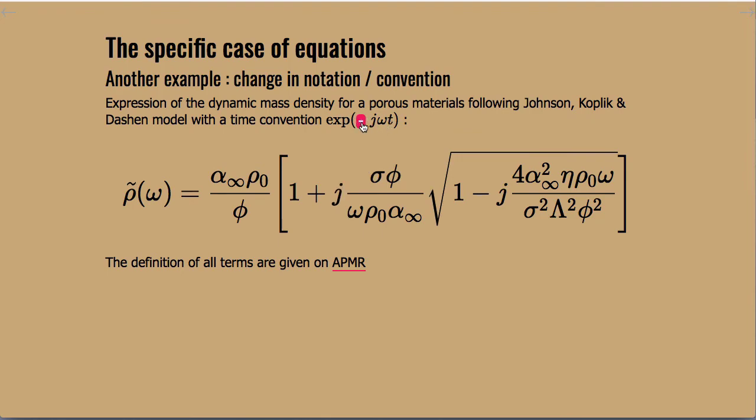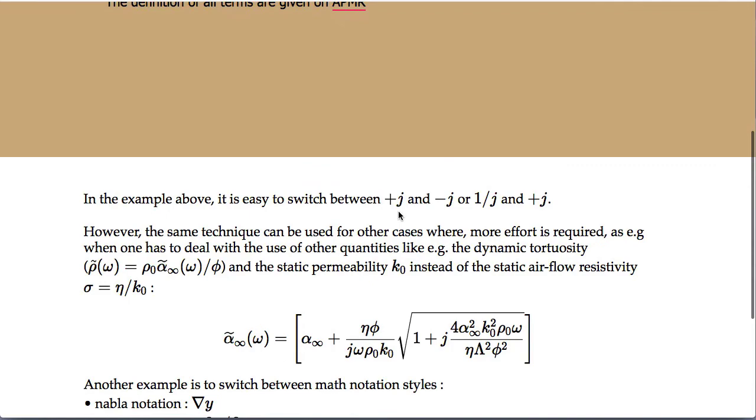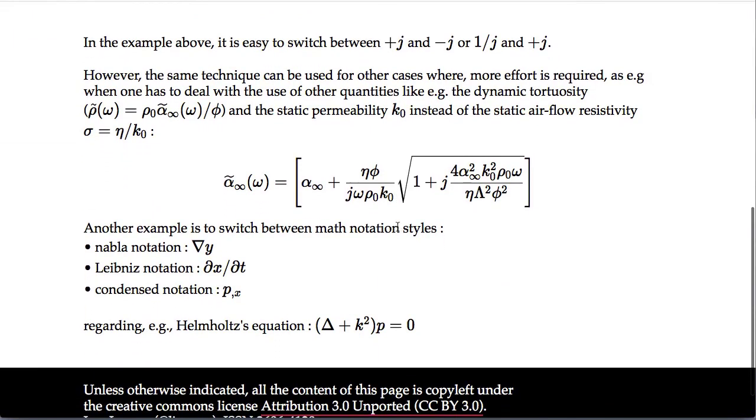So you might think that it's just switching between plus j or minus j but you can do much more than that. You can also switch between one quantity, for example when you use the dynamic mass density, or another one because some authors or some readers are more used to play with the dynamic tortuosity which is this parameter, so here it's easy because it's proportional.